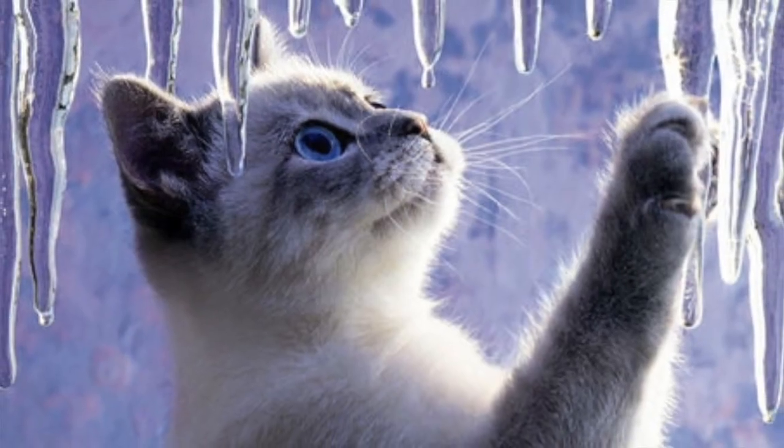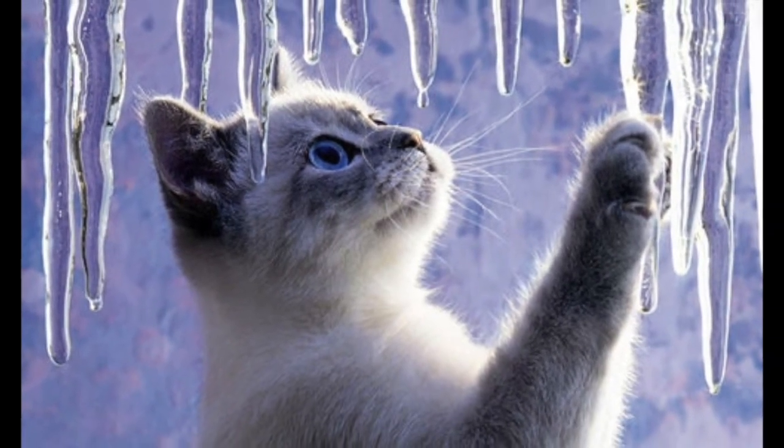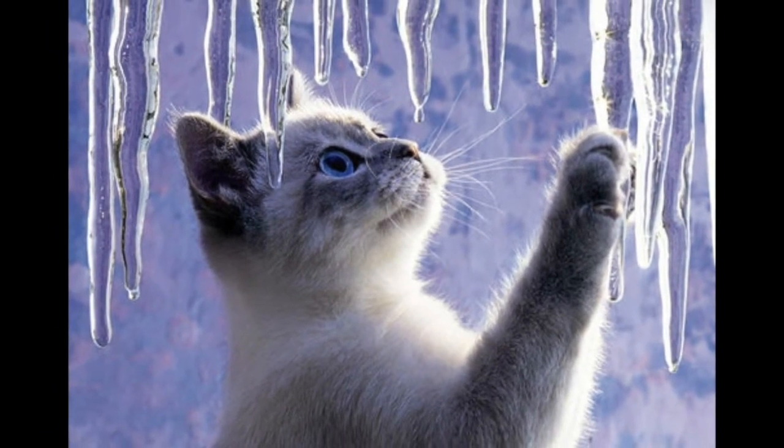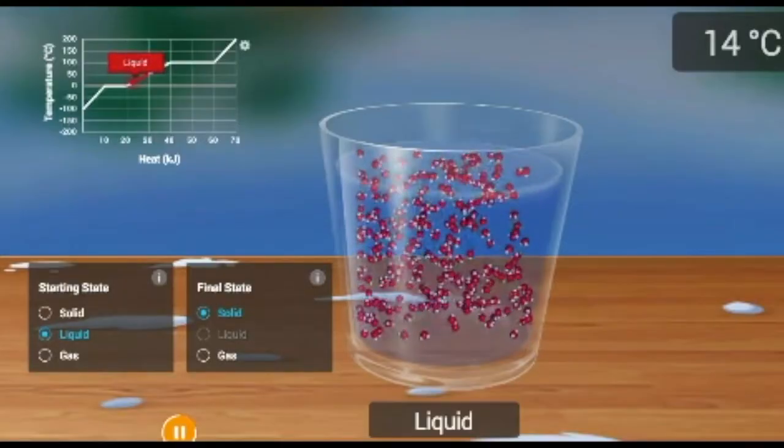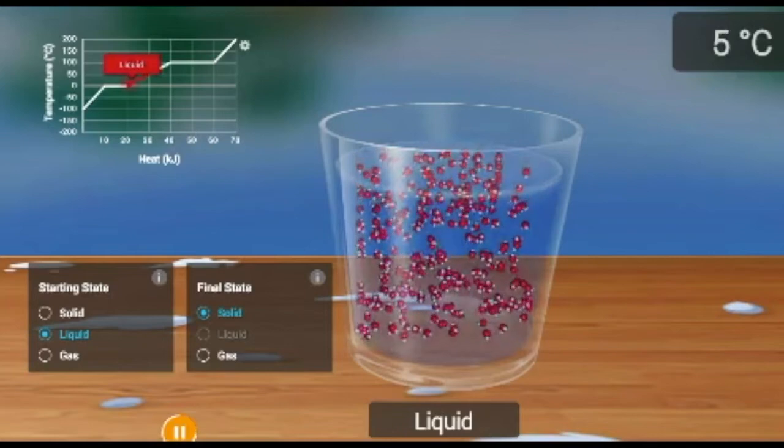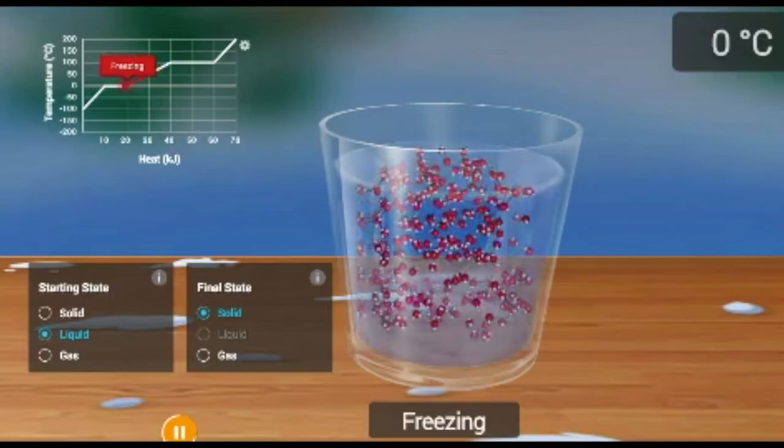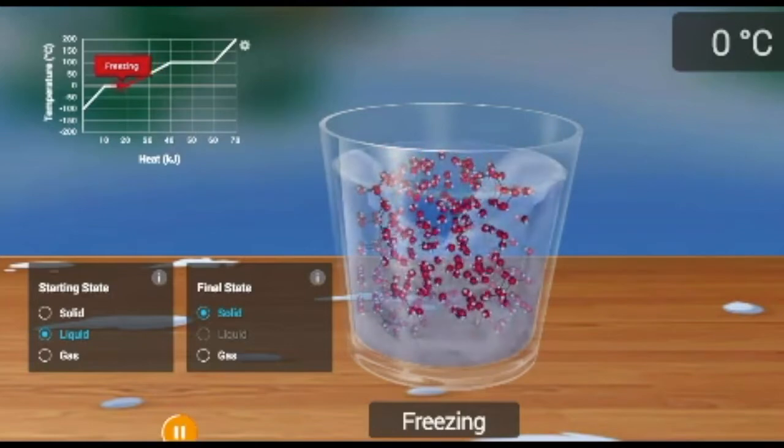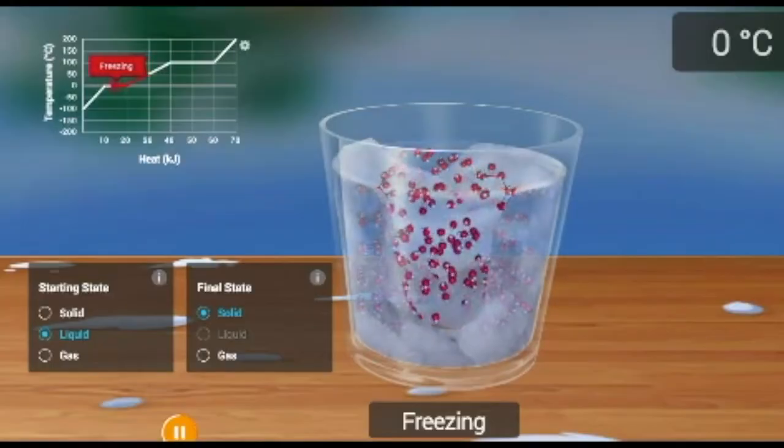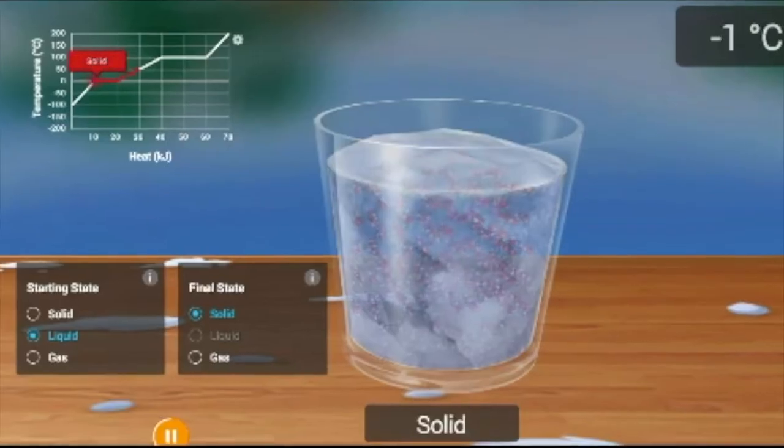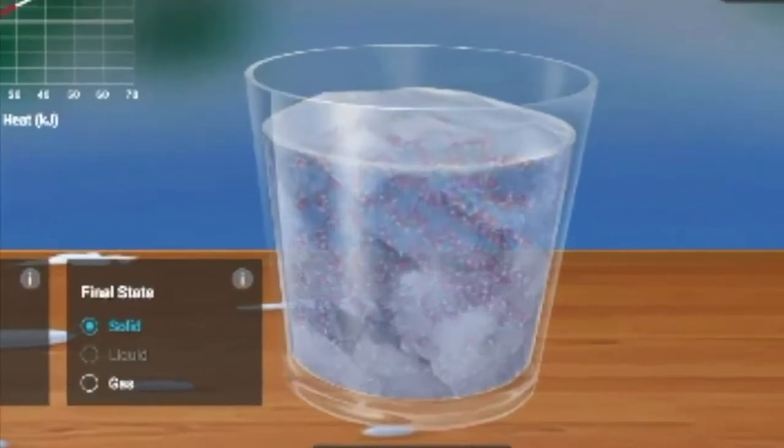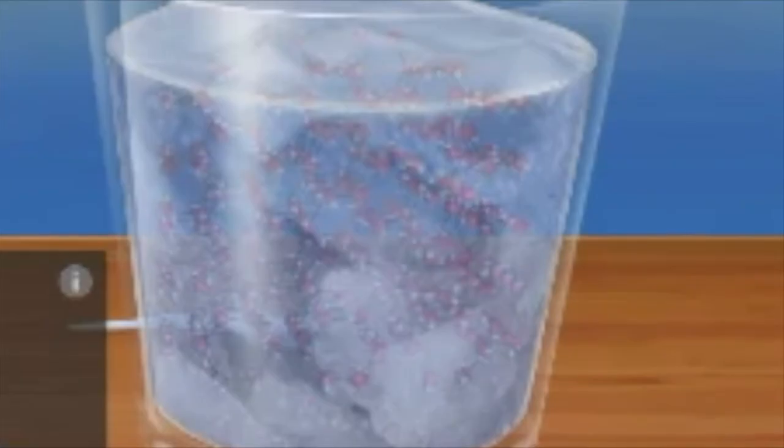Now let's look at liquid turning into solid, which is known as freezing. Freezing is when a liquid substance changes, or freezes, into a solid. The temperature at which a substance freezes is the same as its melting point. The particles in the liquid are in motion, but as it loses heat, the particles lose kinetic energy and begin to slow down and get closer together until they are tightly packed and vibrating in place, making the substance a solid.